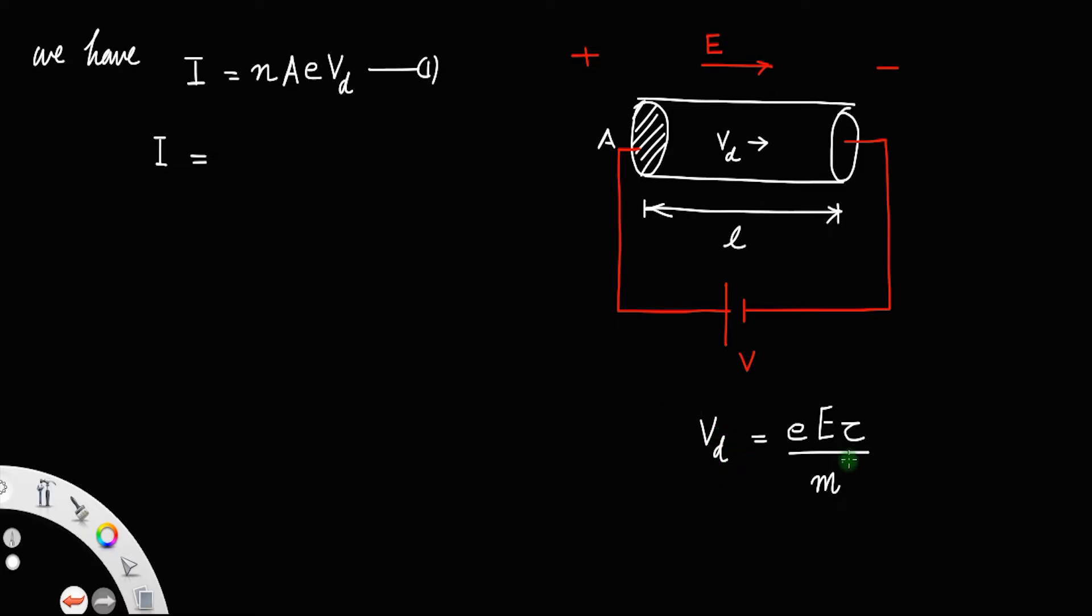So I will put the value of Vd in here the equation one. Let us call this as equation number two. So nAe into, instead of Vd you can write eEτ divided by m. So I will be nAe²Eτ divided by m. Let us call this equation number three.